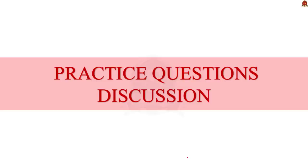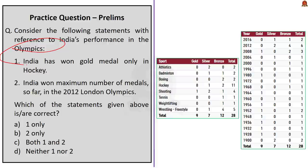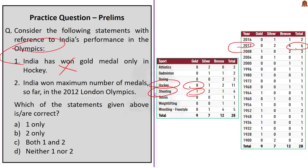Practice prelims question 1: Consider the following statements on India's performance in the Olympics. Statement 1: India has won gold medals only in hockey. Statement 2: India won maximum medals so far in the 2012 London Olympics. Statement 1 is incorrect — India won gold in hockey and also in shooting (Abhinav Bindra, 2008). Statement 2 is correct — India's maximum medals in a single Olympics so far is six, in 2012 London. The correct answer is Option B: two only.